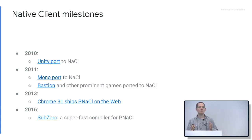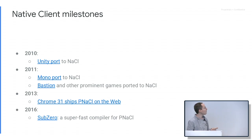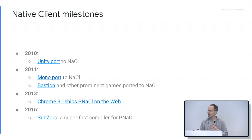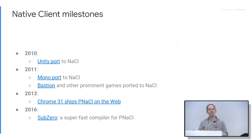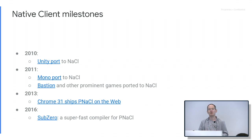Still, the technology made huge strides over the years. In 2010, Unity was ported to NaCl — Unity is a massively important and extremely popular game engine. In 2011, Mono was ported — a CLR implementation, also very important for games. Also in 2011, there was a lot of noise around Bastion and other popular games being ported to NaCl. A big milestone came in 2013, when Chrome decided that PNaCl was safe and stable enough to be enabled for web content. Until then it was just on the Chrome Web Store. The idea was: ship it, web devs will use it, show how useful the technology is, and other browsers will welcome it.